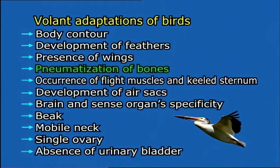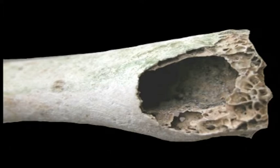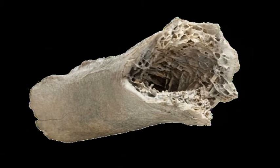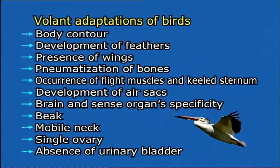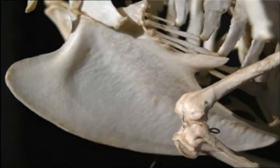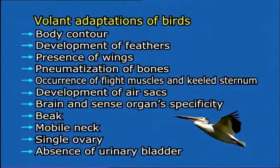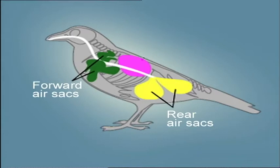Pneumatization of bones: the bones of birds are hollow and air-filled, containing many air cavities, which add buoyancy during flight. Occurrence of flight muscles and keeled sternum: specific flight muscles are developed which connect the wings with limb bones. Each wing possesses specialized muscles called pectoralis major and pectoralis minor. The sternum or breast bone is well developed and bears a median keel or carina for attachment of pectoralis muscles. Development of air sacs: they act as air reservoirs during respiration and serve as balloons to provide lightness and buoyancy to the body.